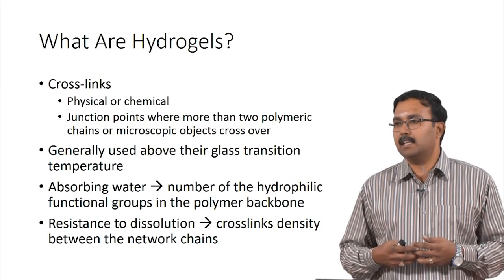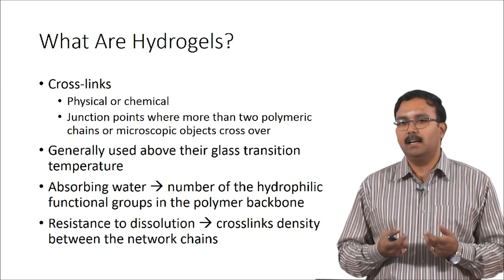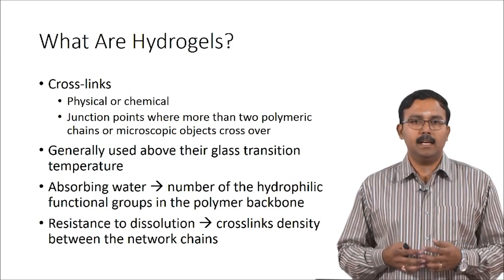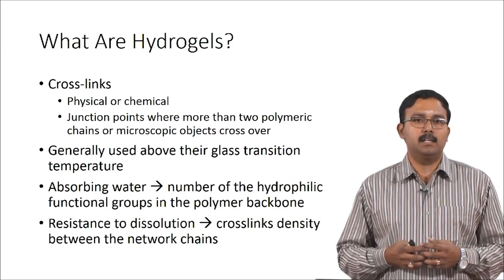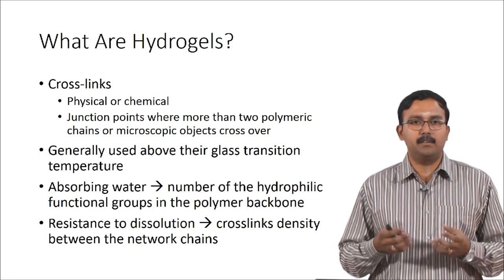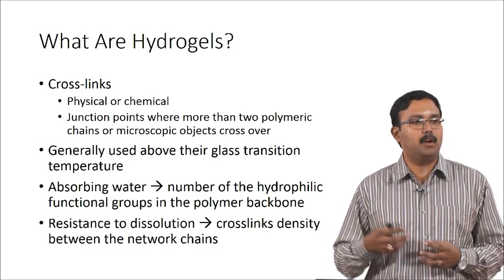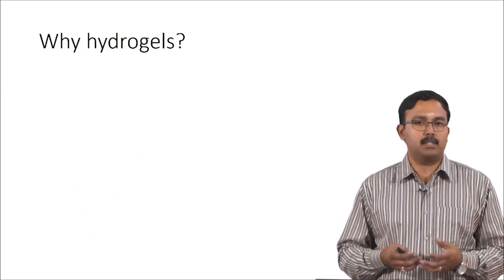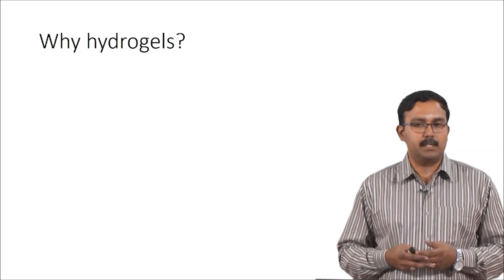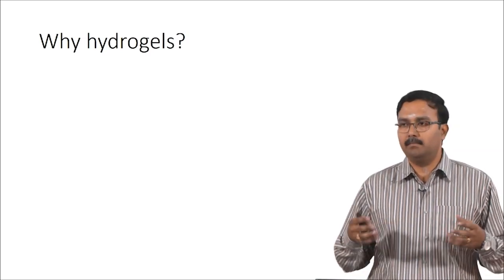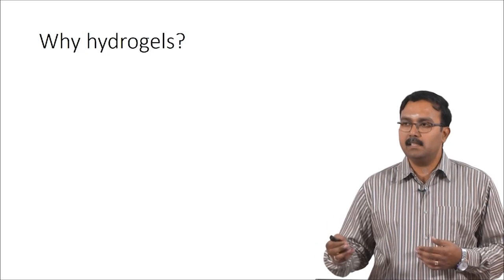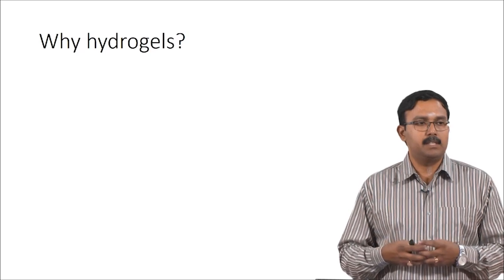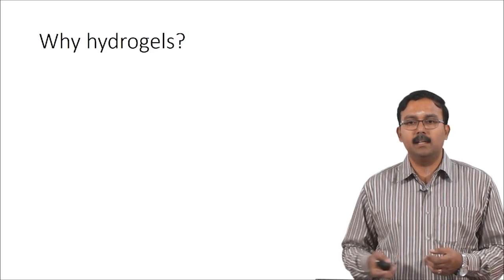If used below the glass transition temperature, the hydrogel would be glassy and cannot be used in a biomedical application. Hydrogels can absorb a lot of water because there are many hydrophilic functional groups on the polymer backbone. The resistance to dissolution happens because of the crosslink density between the network chains — as crosslinking increases, you create an insoluble hydrogel which has the ability to withstand the environment.